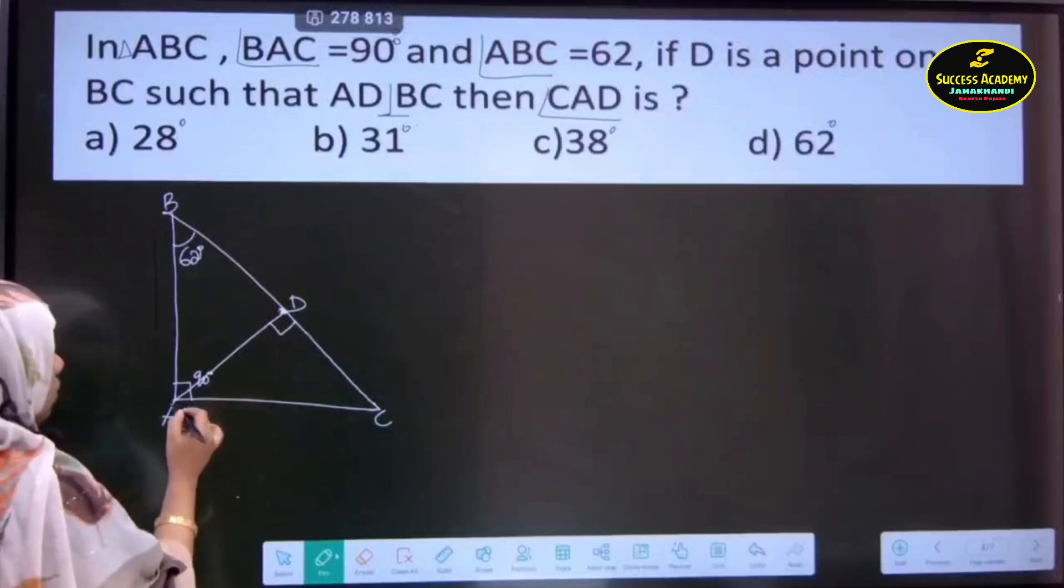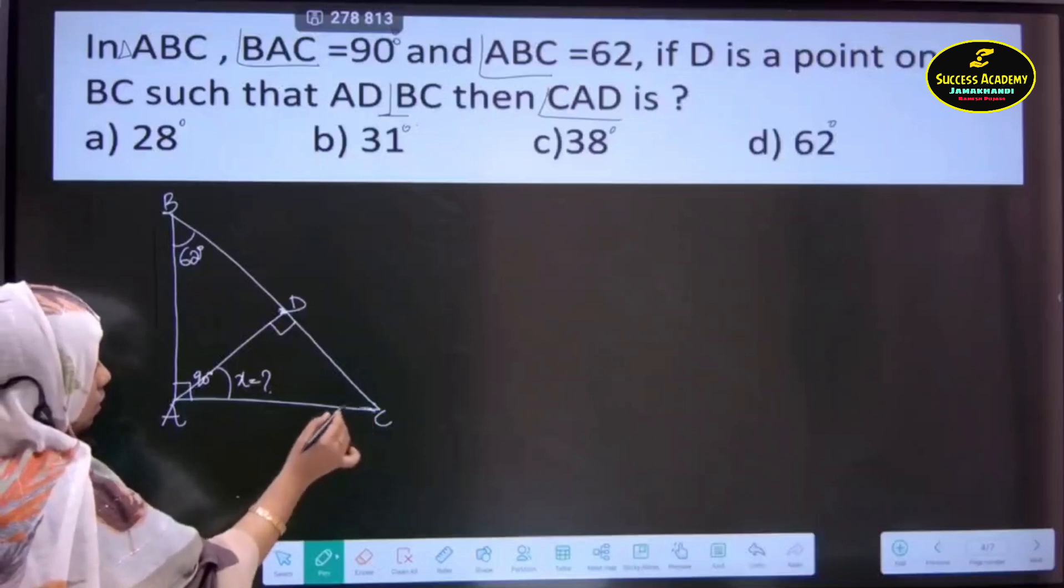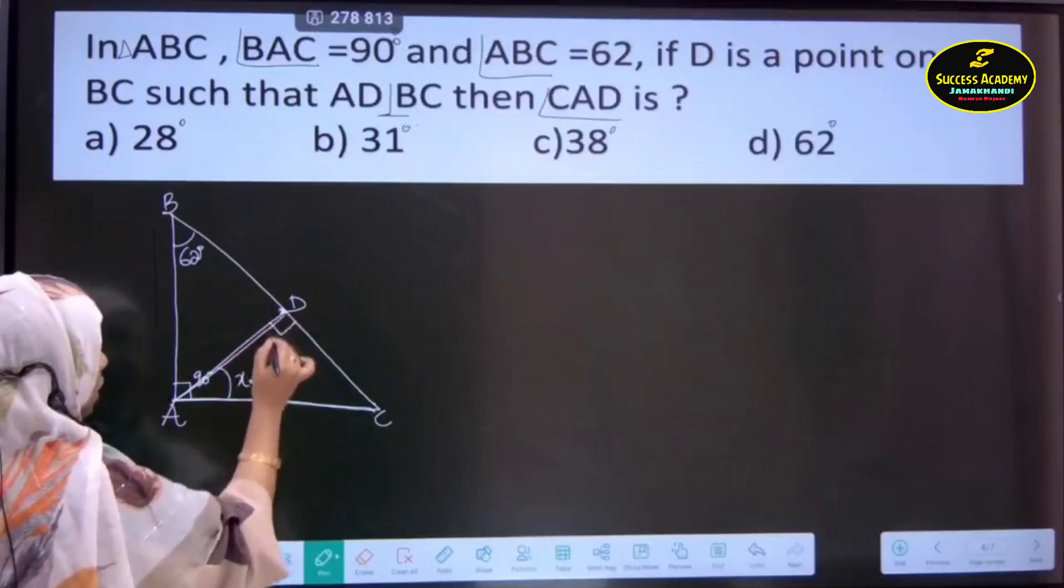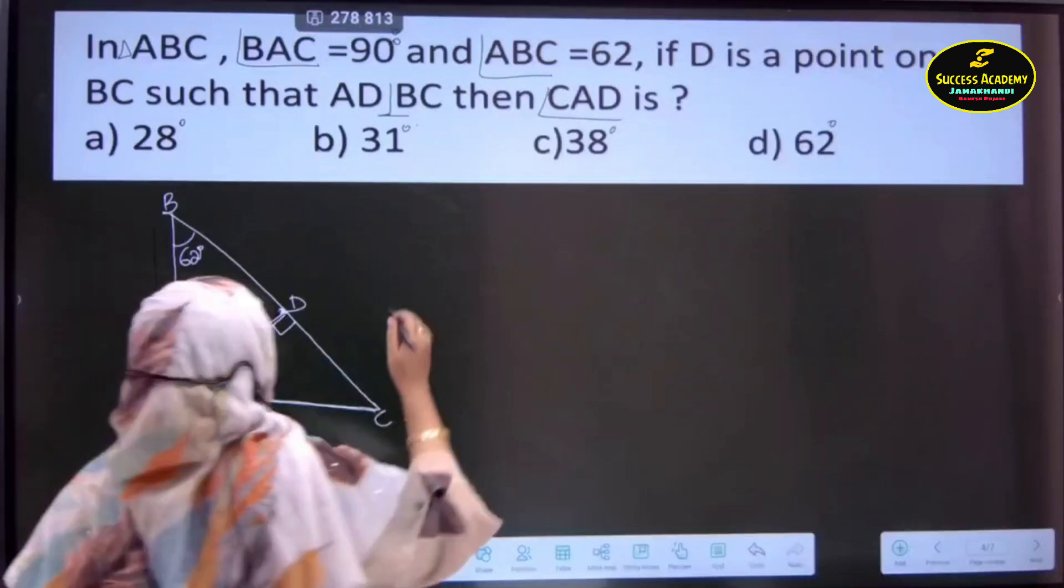Then, angle CAD means this is how much? Angle C, A and D. This is we are going to find now. So, let us come to the solution.